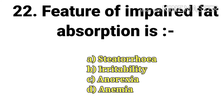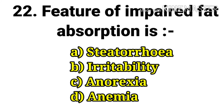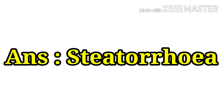The next question: the feature of impaired fat absorption is — options are steatorrhea, irritability, anorexia, and anemia. The answer is steatorrhea.